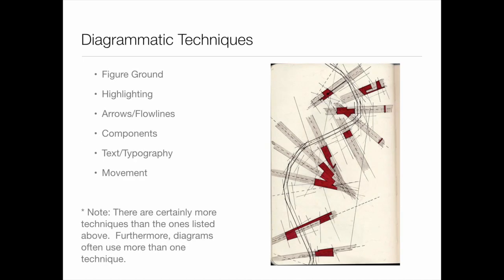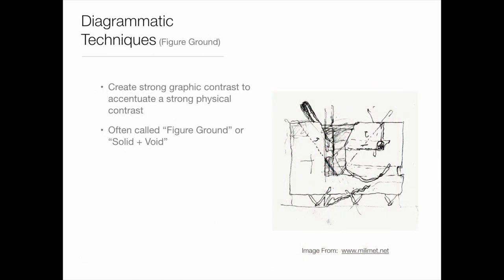Let's look at some diagram types and examples. The types we'll go over today are: figure ground, highlighting, arrows and flow lines, components, text and typography, and movement. Diagrams often bridge the gaps between these—something with arrows also tends to show movement, so they overlap. I've tried to distill these out into major ideas so you understand the big ways of representing something, but recognize they always crossbreed.